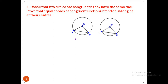Draw two circles with centers O and O′. AB is a chord in the first circle, CD is a chord in the second circle, and AB = CD. Since the circles are congruent, they are equal in all respects — their radii are equal. AO = BO (radii of first circle), CO′ = DO′ (radii of second circle), and AO = CO′ because they are radii of congruent circles.